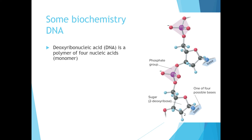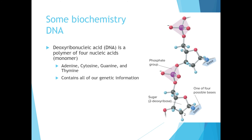Our second biomolecule is DNA, which refers to deoxyribonucleic acid. It's a polymer similar to a protein, made of individual monomers called nucleic acids. There are four nucleic acids that are covalently bonded together to make DNA strands: adenine, cytosine, guanine, and thymine. DNA is the molecule in our body that contains our genetic information. It codes for all the proteins that make up our body, is found in every single cell, and is made with just those four bases.